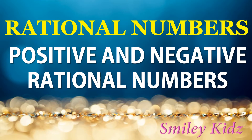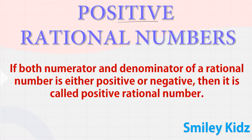Positive rational numbers: if both the numerator and denominator of a rational number are either both positive or both negative, then it is called a positive rational number.